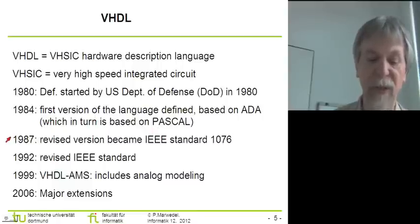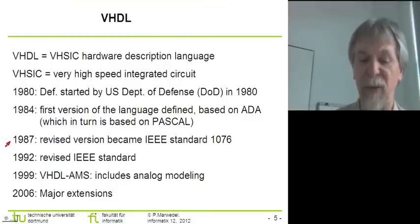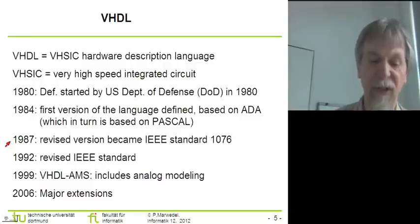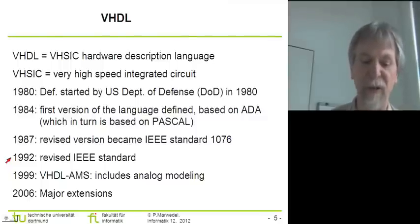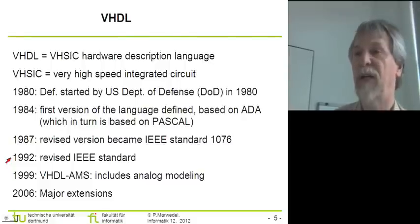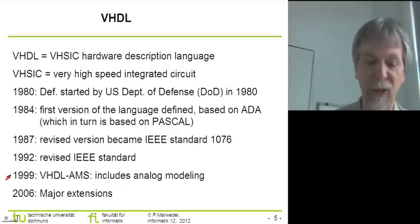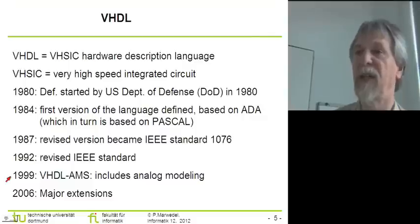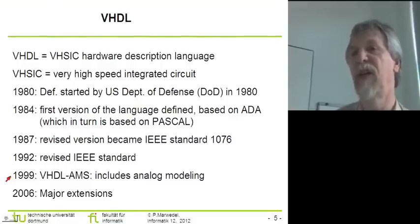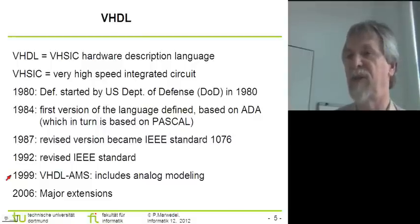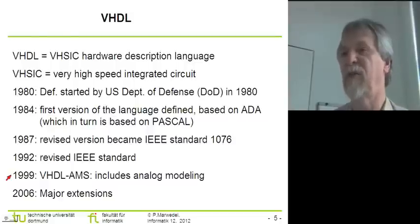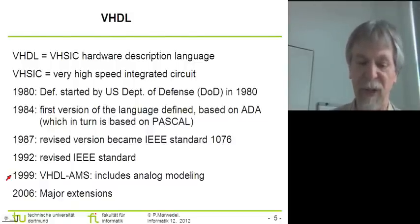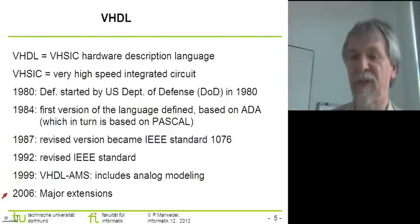Later, the language became publicly available as IEEE standard 1076, standardized in 1987. IEEE requires all standards to be reconsidered every five years, so there was a revision in 1992 and a couple of further revisions and extensions since then. Most notably, in 1999, the capability to also model analog systems was added as an optional extension (VHDL-AMS). This may be interesting in cyber-physical systems contexts, since modeling physical systems may require partial differential equations. Major further extensions were added in 2006.